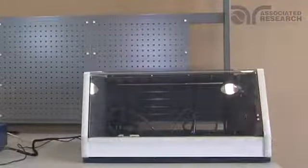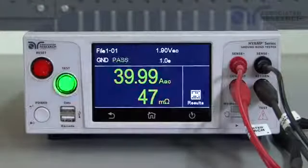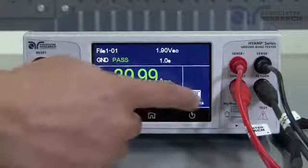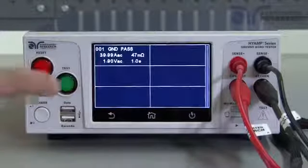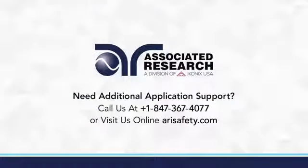Close the DUT enclosure door, stand back and push the test button to run your test sequence. To view your results, simply press the results button. Press the individual step to get details.